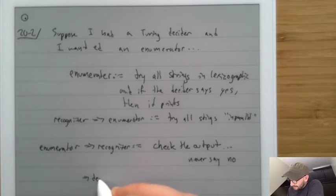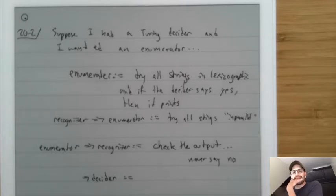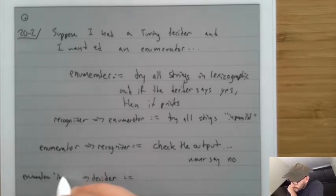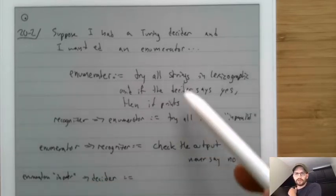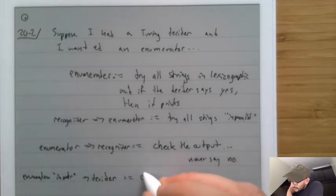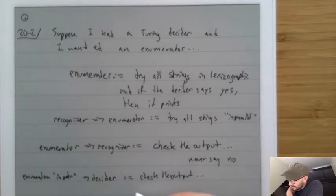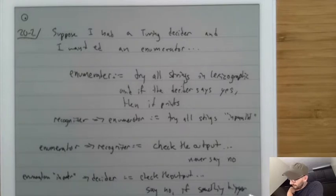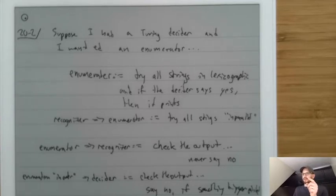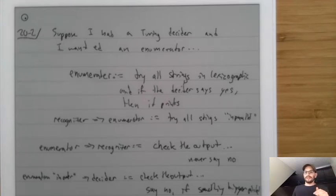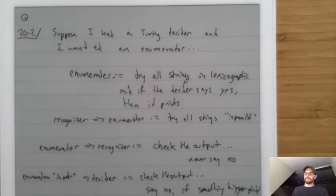But what if we wanted a decider? We could put a constraint that the enumeration is in lexicographic order. Then we can still check the output, but say no if something bigger gets printed. For example, if you gave me a string of length 10 and strings come out in order — length 0, 1, 3, 4, 5, 6 — but then something of length 11 comes out and the length-10 string never appeared, then it must not have been accepted, and we can say no.